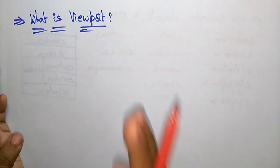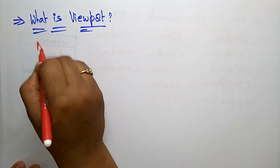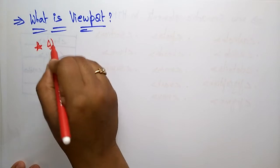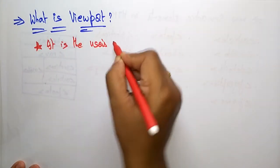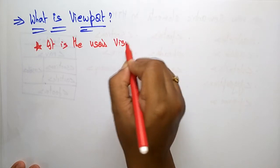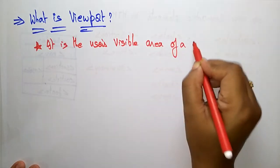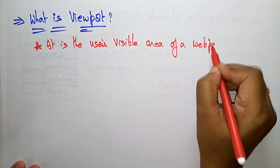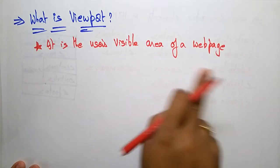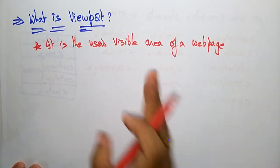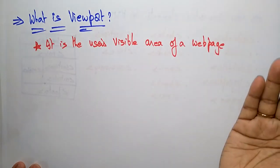A viewport is the user's visible area of a web page. That's why we call it a viewport — it is the visible area of a web page. It varies with devices and will be smaller on mobile phones than on the computer screen.